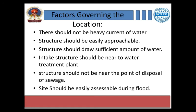What are the governing factors that affect or decide the location of intake structures? Following factors apply: There should not be heavy current of water — if there is heavy current, we cannot provide an intake structure at that place. The structure should be easily approachable to the staff of the irrigation system or water supply system. The structure should draw a sufficient amount of water. The intake structure should be near to the water treatment plant. The structure should not be near the point of disposal of sewage, so that it will not spoil or disrupt the quality of the water drawn. And the site should be easily accessible during flood time also — if it gets flooded, we should still be able to approach the site.